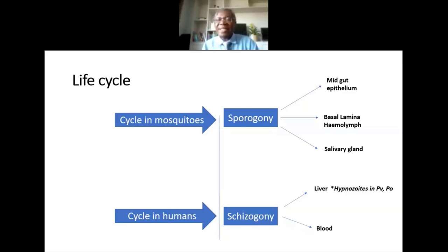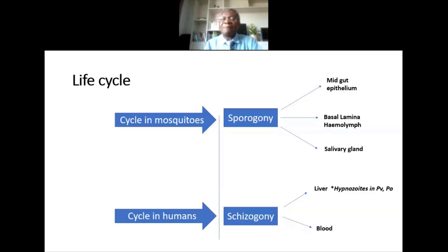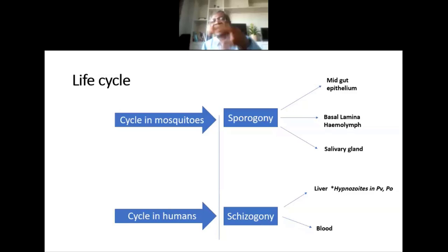The zygote develops further into an oocyst, which passes through the basal lamina and is shed into the hemolymph. The oocyst develops into the ookinete, which moves to the salivary gland and is ready to be excreted during feeding by the Anopheles mosquito. In the human cycle, while the mosquito is probing to find a vessel, the parasites — sporozoites generated from sporogony — are deposited under the skin and then move through skin tissues until they find a vessel.